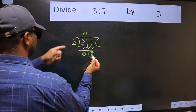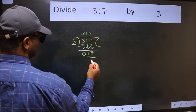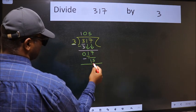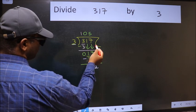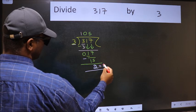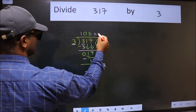A number close to 17 in the 3 table is 3 times 5, 15. Now we should subtract. We get 2. No more numbers to bring down, so we stop here. This is our remainder and this is our quotient.